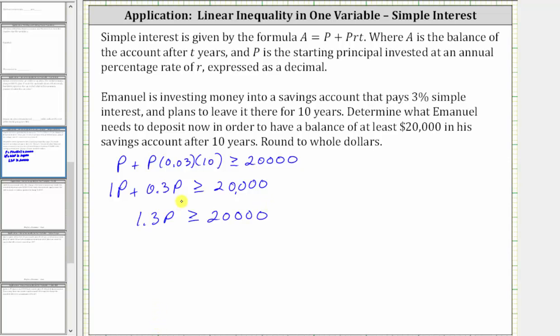And then finally to solve for P, we divide both sides by 1.3. Simplifying on the left, 1.3 divided by itself simplifies to one, giving us P must be greater than or equal to 20,000 divided by 1.3. Let's find this quotient on the calculator.